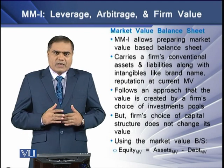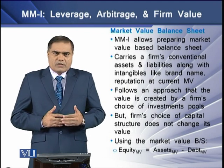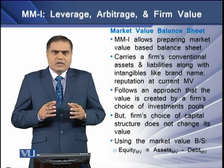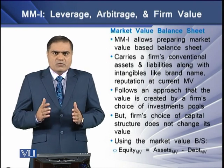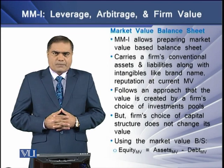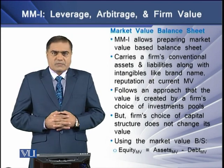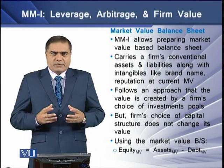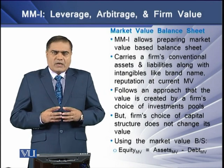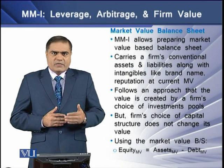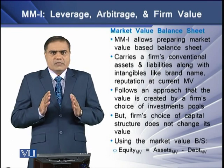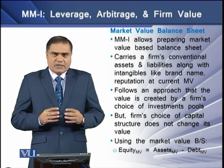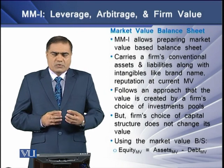It is MM, or the Modigliani and Miller proposition 2, that allows a firm to prepare its balance sheet using the market values of its assets and liabilities. Such a balance sheet carries the firm's conventional assets and liabilities as well as other intangible assets — like human capital, the firm's brand value, and other such intangible assets — at their current market price. This balance sheet follows an approach that value is basically created by the choice of investment pools by the firm.